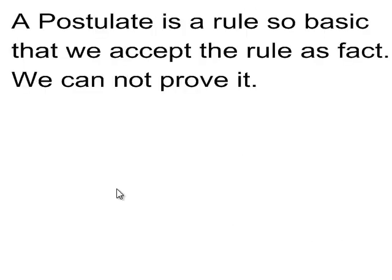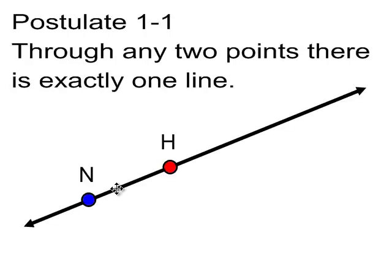Postulates: postulates are a rule that are so basic that we just accept it. We can't prove it. So, our first postulate is going to be postulate 1-1. Through any two points, there's exactly one line.